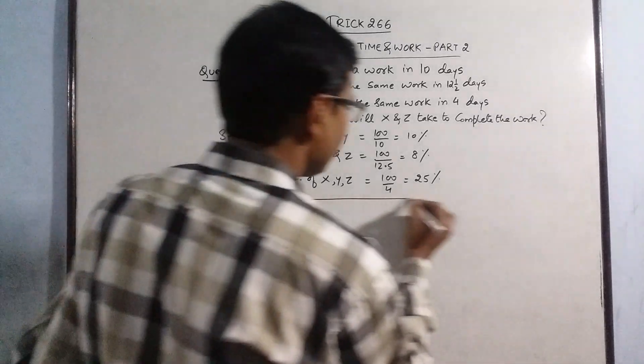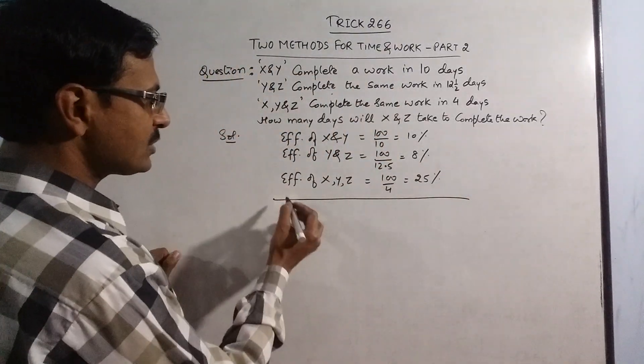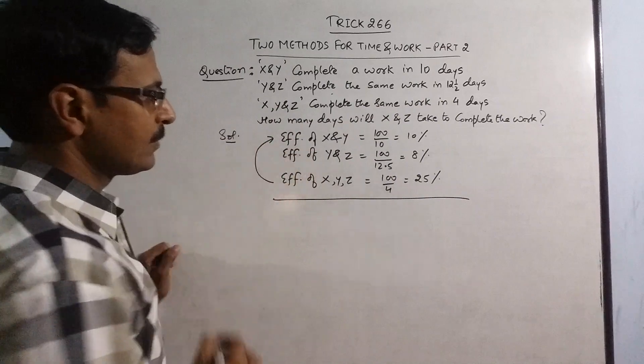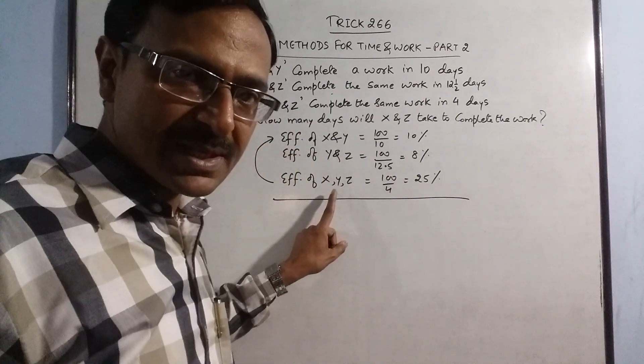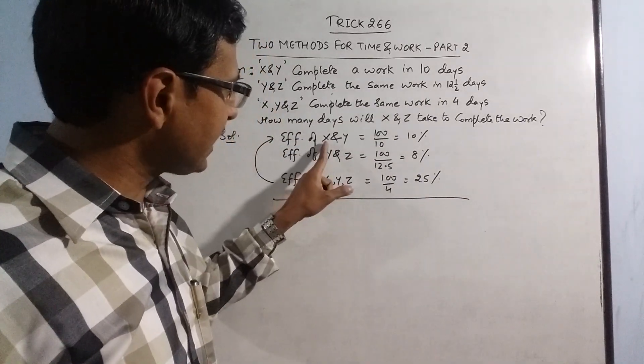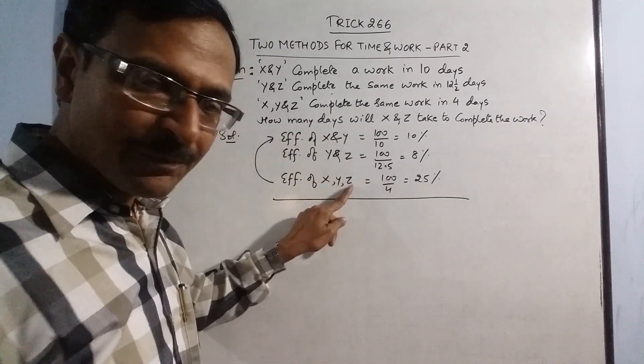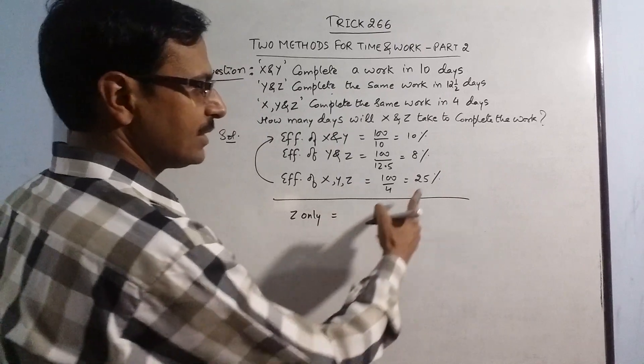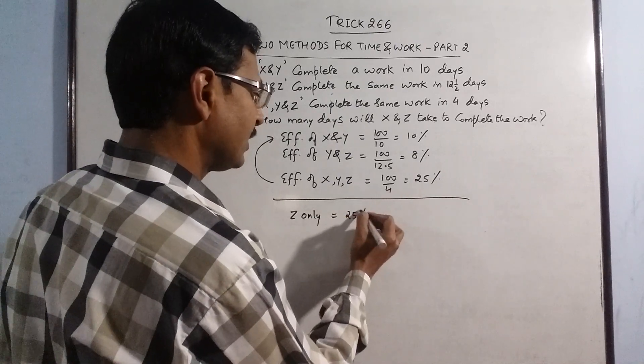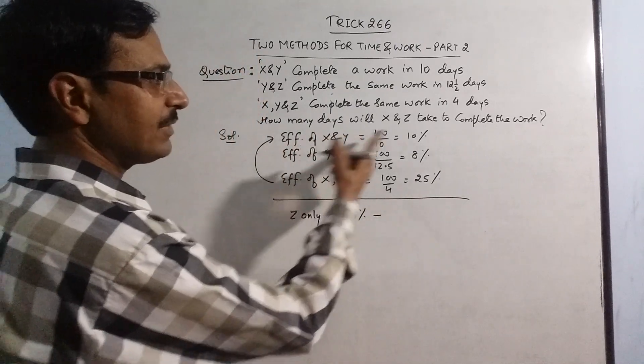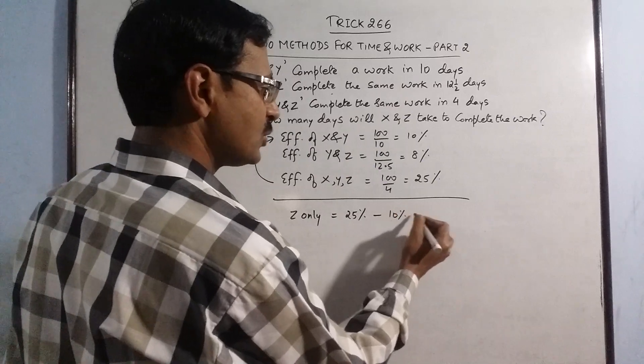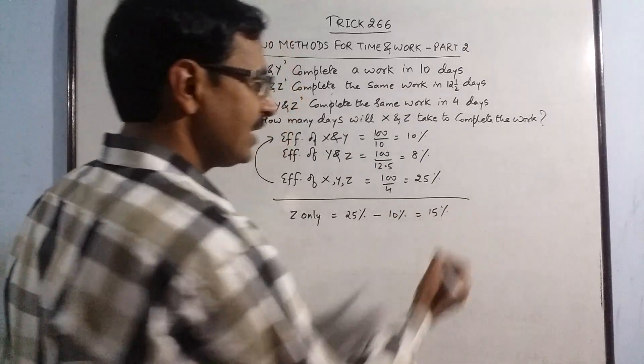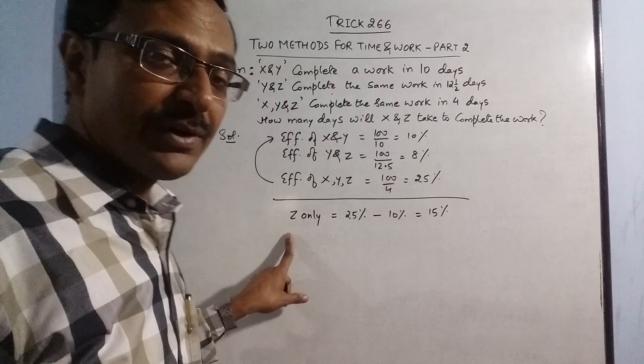Now out of these three if you subtract these two, see these are all three percent x, y, z and this is x and y. So if you subtract only z is remaining, so z only means this is 25 percent minus x and y 10 percent. So 15 percent efficiency is of z only.